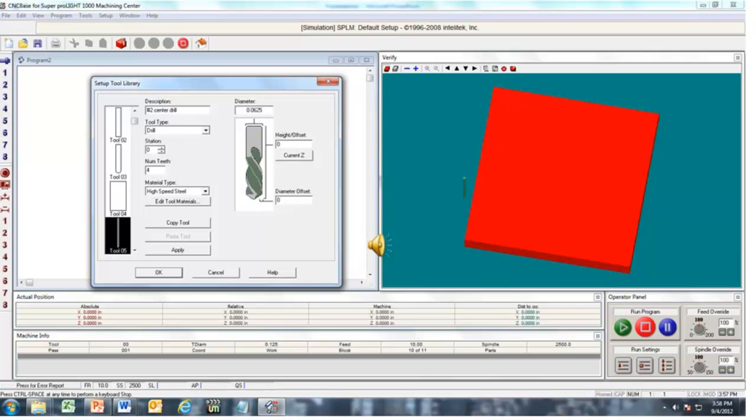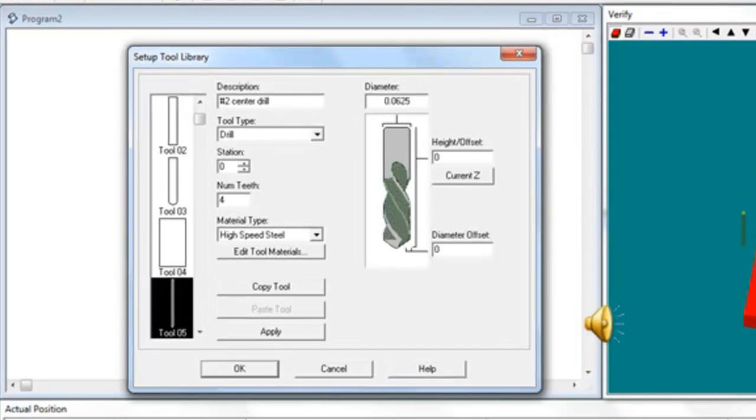Remember in the previous exercises, we need to make sure we are using the proper tool for the application. Here we are using tool number 5 to engrave the circle on the part. Tool 5 is a 1/16th of an inch engraving tool.